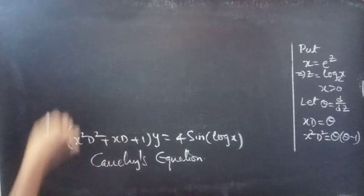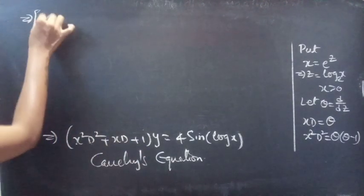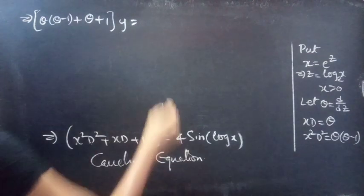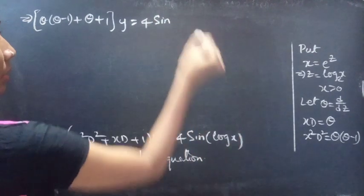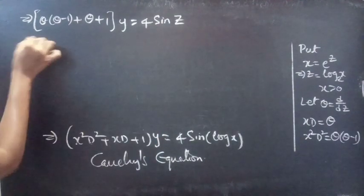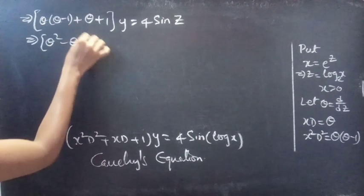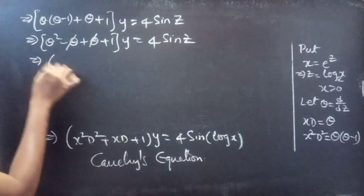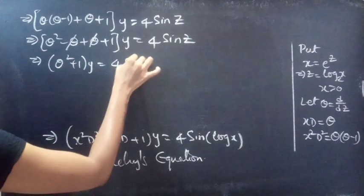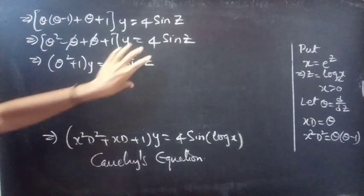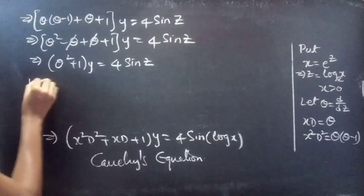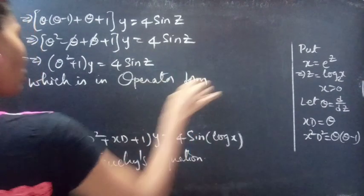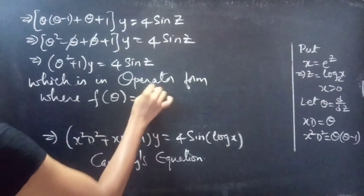Now we can write this equation by replacing x squared d squared with theta(theta minus 1), plus theta, plus 1 into y equals to 4 sin z — replacing log x by z. Expanding: theta squared minus theta plus theta plus 1 into y equals to 4 sin z. The minus theta and plus theta cancel, giving us (theta squared plus 1) into y equals to 4 sin z, which is in operator form f(theta) into y equals to a function in z, where f(theta) equals theta squared plus 1.